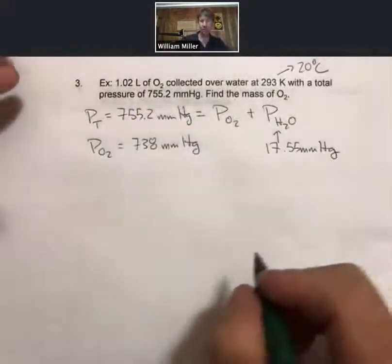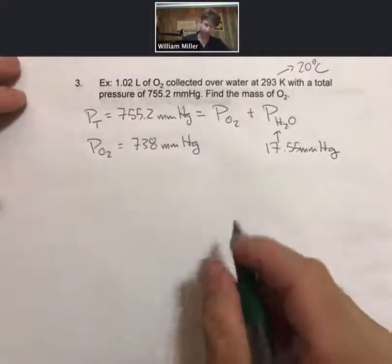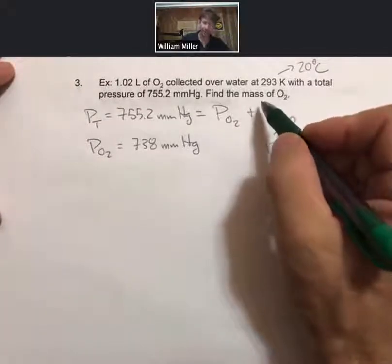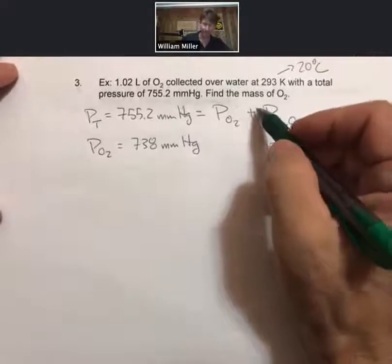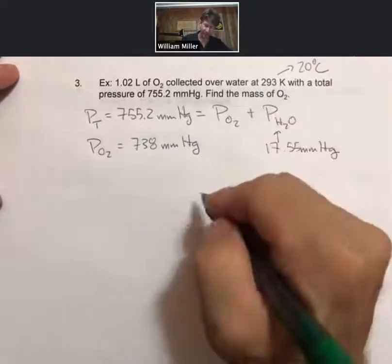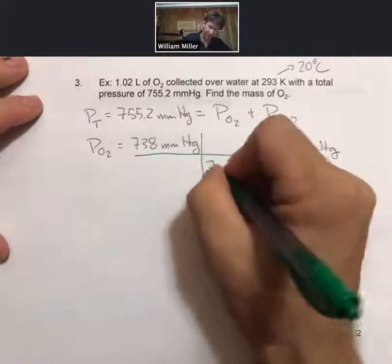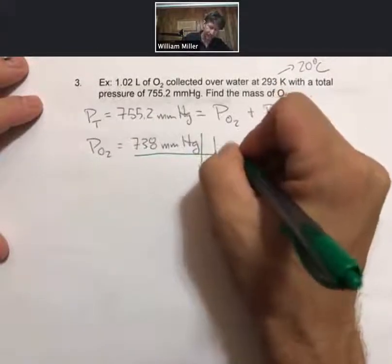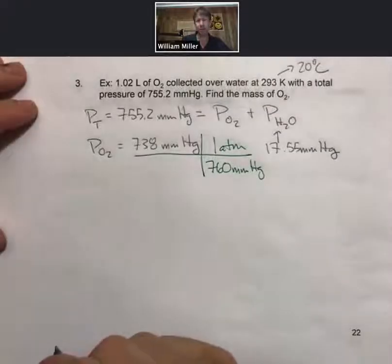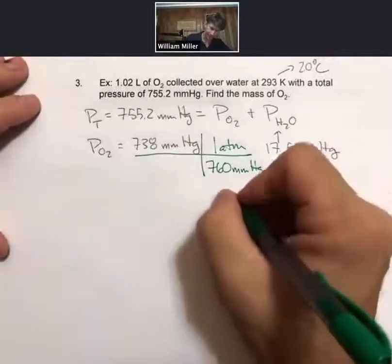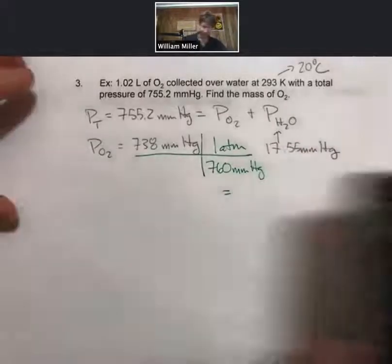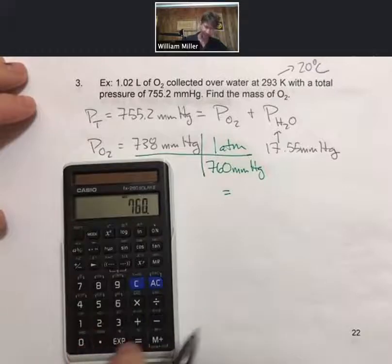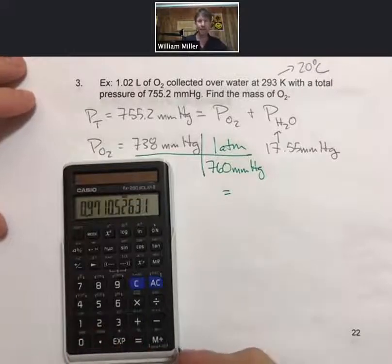738 millimeters of mercury—when we're going to find the mass of oxygen, we're going to put that into the ideal gas law, solve for moles first, and then find the mass. To do that, we need atmospheres, so I'm just going to convert my millimeters of mercury into atmospheres. Using 738 divided by 760, I get 0.971 atmospheres.